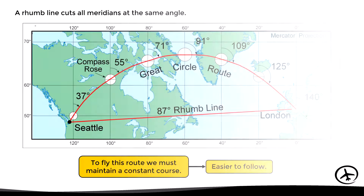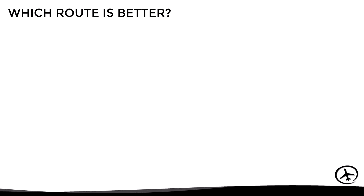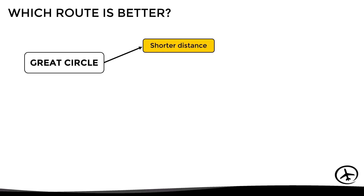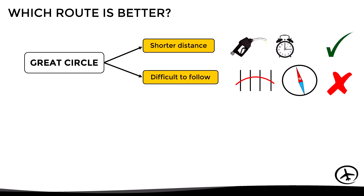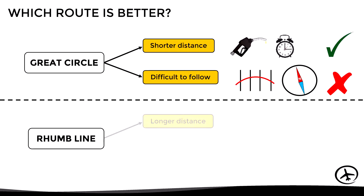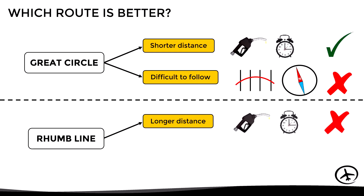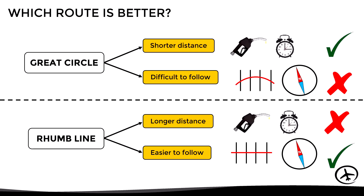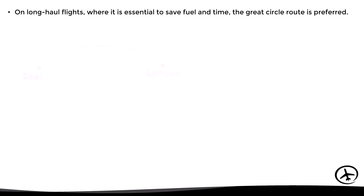So which route is better? The great circle route is shorter than the rhumb line, which means we save time and fuel — however, it is more difficult to follow since constant course changes are required. On the other hand, the rhumb line is longer, meaning more time and fuel are spent, but it is much easier to follow since the course is always the same. Depending on the distance to be covered, it will be more convenient to use one or the other.